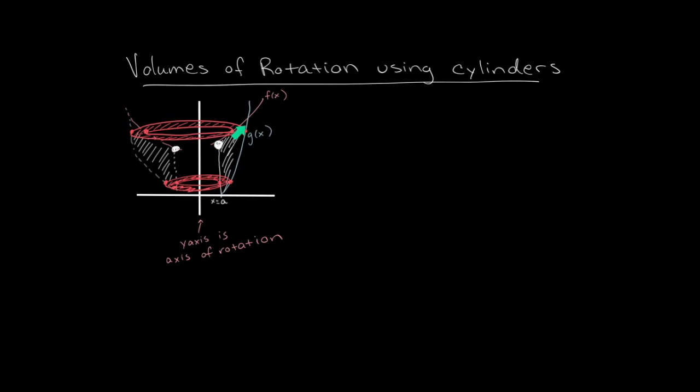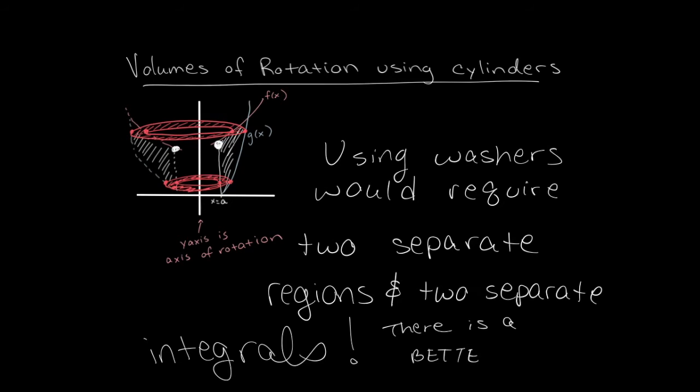Up above, we have the outer radius according to the blue g function and the inner radius according to the red f function. You can go ahead and try a problem like this, but there is a better way using cylinders that we'll talk about next.